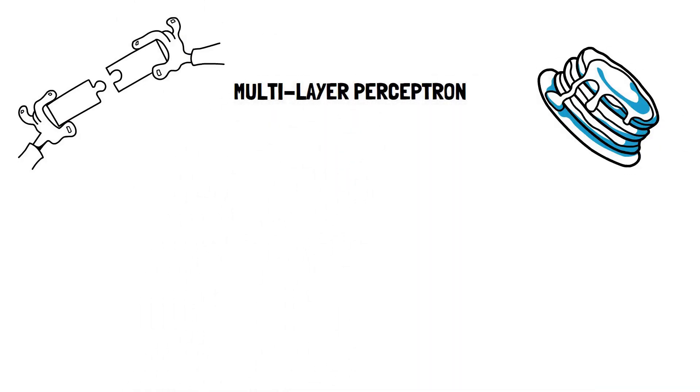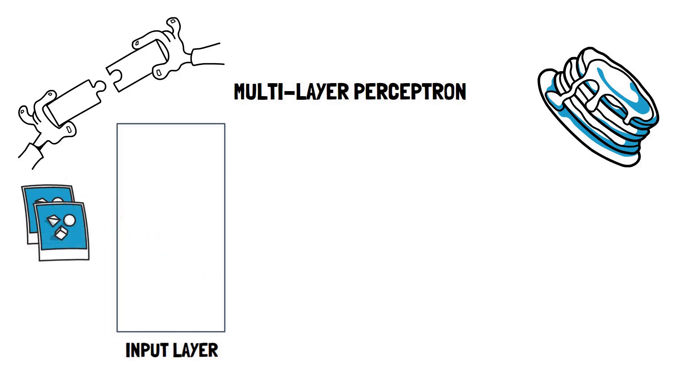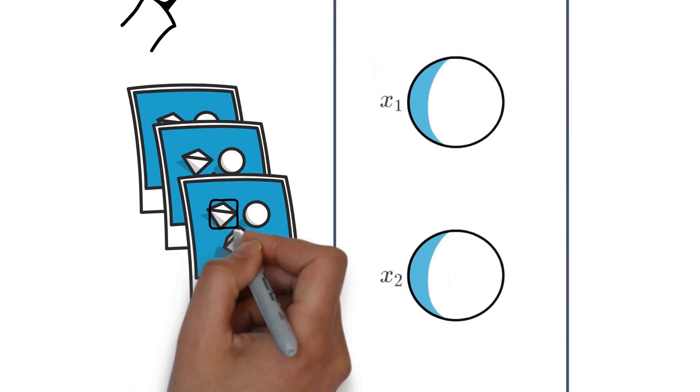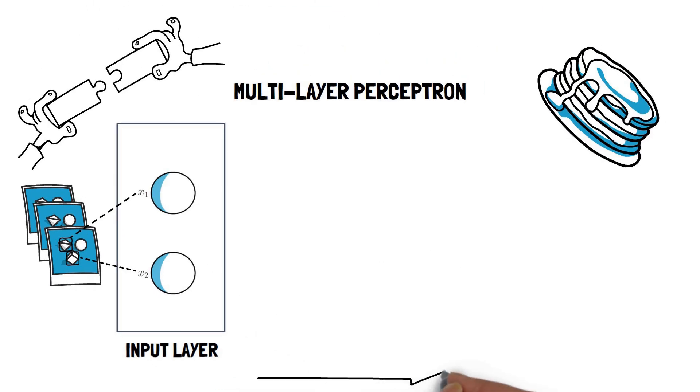The first layer is the input layer. This layer does not contain perceptrons or neurons, it is more like a distribution layer that feeds the actual input data into the network. Each node in the input layer corresponds to a single feature in the input data, and it directly passes its value to the next layer.